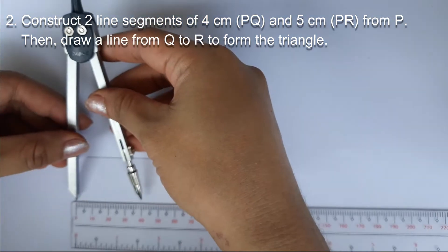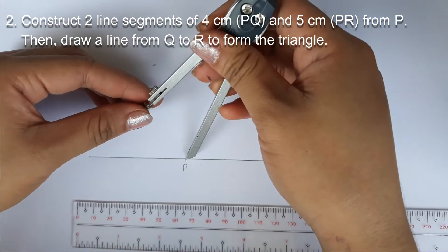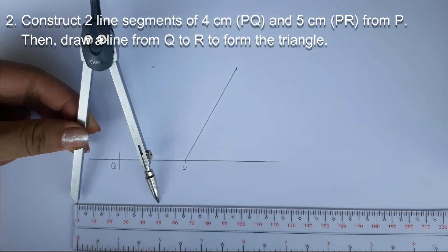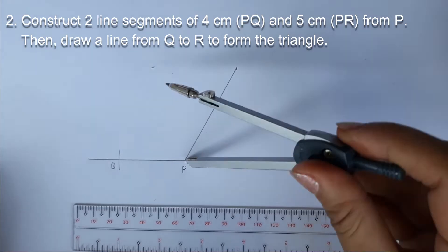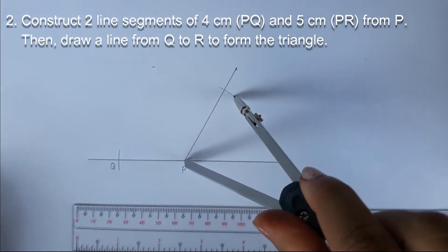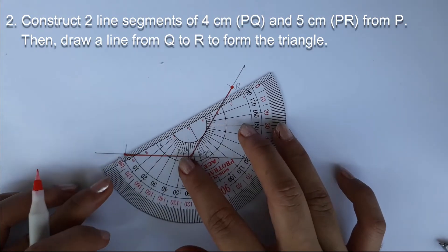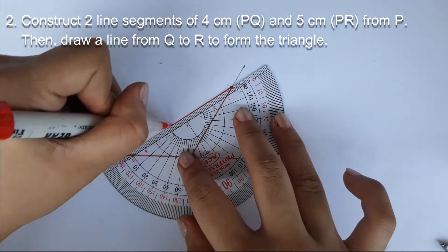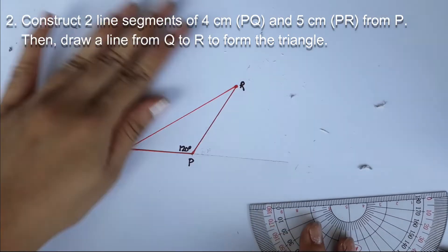Step 2. We construct two line segments of 4 centimeters, we will name this as PQ, and 5 centimeters, we will name this as PR, from P respectively. Then, draw a line from Q to R to form the triangle.